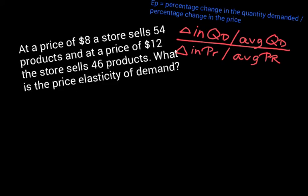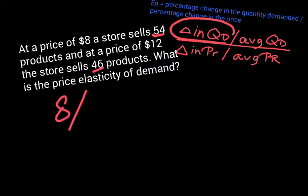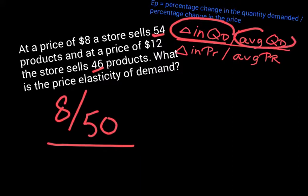Let's plug in some numbers. The change in the quantity demanded: the quantity goes from 54 to 46, so it changes by 8. Then we need the average of 54 and 46. The average is the number right in the middle, which is 50. You can also add 54 plus 46 to get 100, then divide by 2, which also gives 50. So the change in quantity demanded is 8 and the average quantity demanded is 50.